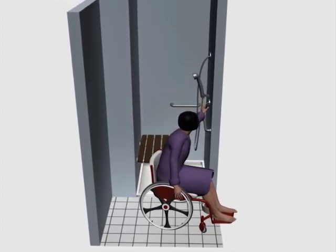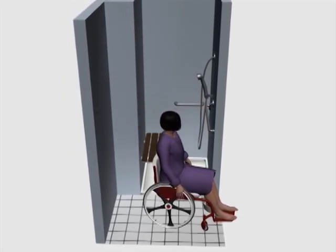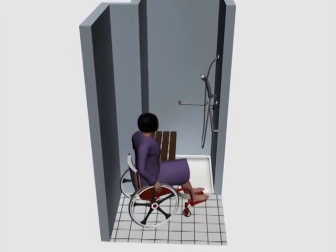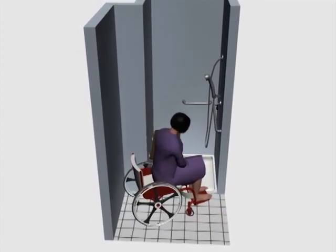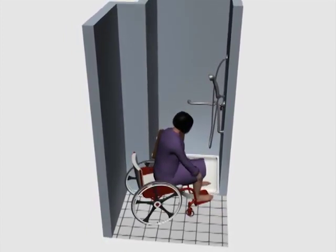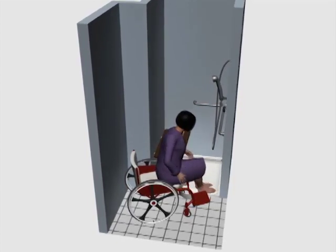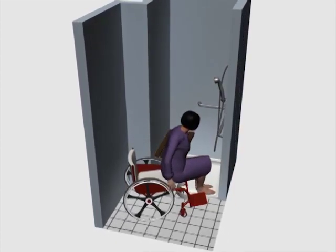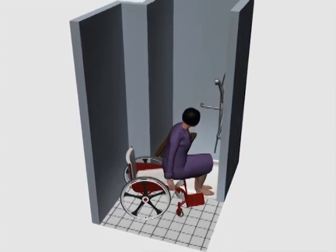Grab bars opposite the seat and shallow thresholds 1 ½ inch maximum high facilitate transfer from wheelchairs and other mobility aids. Shower spray units must be located on the side wall opposite the seat.